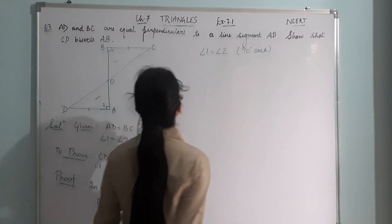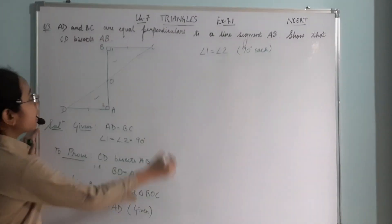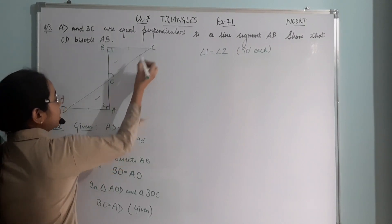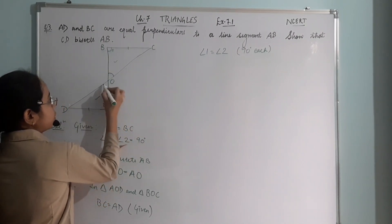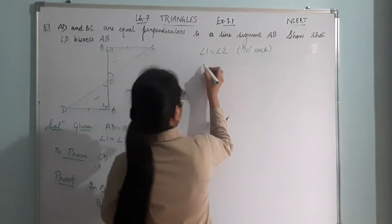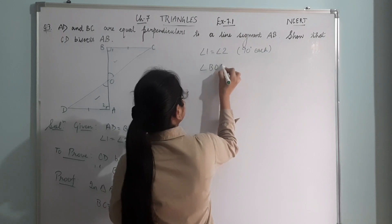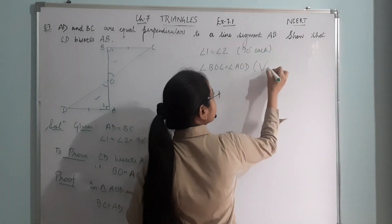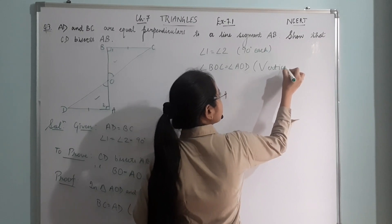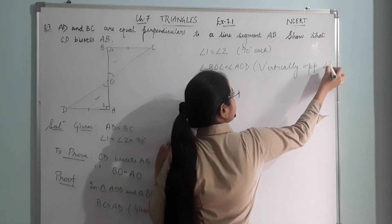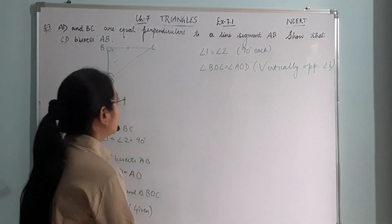Now the third part is we can write angle BOC equals angle AOD, vertically opposite angles. So angle BOC equals angle AOD, vertically opposite angles.